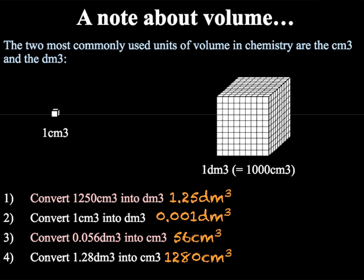The answers are: 1250 cm³ equals 1.25 dm³; 1 cm³ equals 0.001 dm³; 0.056 dm³ equals 56 cm³; and finally 1.28 dm³ equals 1280 cm³.